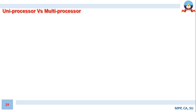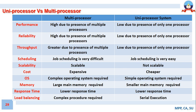Let us create a distinction between uniprocessor and multiprocessor systems taking into account various qualitative parameters. The qualitative parameters considered here are: performance, reliability, throughput, scheduling, scalability, cost, use of operating system, memory, response time, and load balancing. These are some prominent qualitative parameters, though there can be many others.